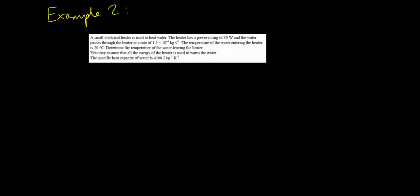Let's now try a more complex example. A small electrical heater is used to heat water. The heater has got a power rating of 30 watts and the water passes through the heater at a rate of 1.5 times 10 to the minus 3 kilograms per second. The temperature of the water entering the heater is 20 degrees Celsius. Determine the temperature of the water leaving the heater. You may assume that all the energy of the heater is used to warm the water and it gives us the specific heat capacity of water here as 4200 joules per kilogram per Kelvin.